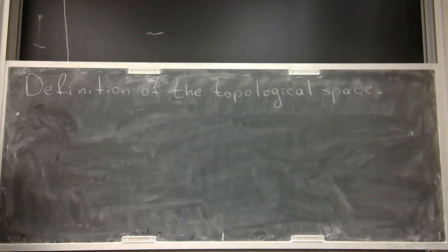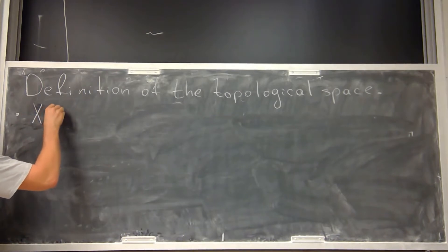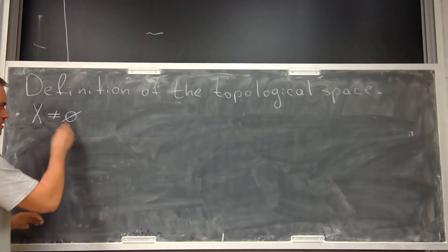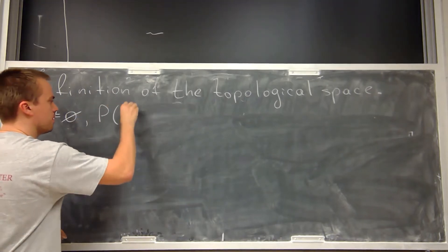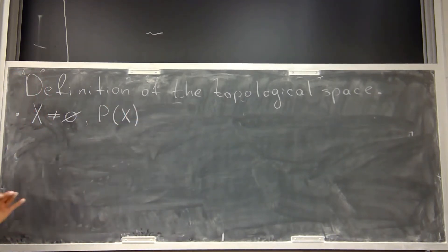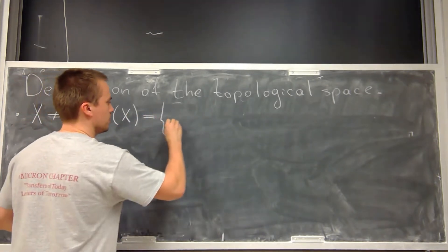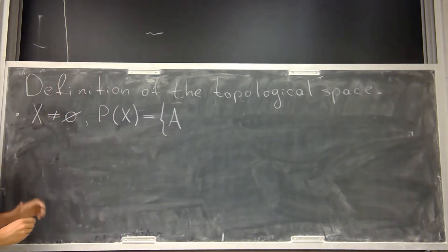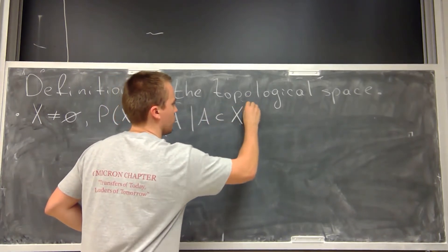If you want to talk about topological space, first we need to talk about sets — specifically non-empty sets. If we have a non-empty set X, then we can consider the power set of X. The power set of X is itself a set, and by definition it consists of all elements A where A is a subset of X.